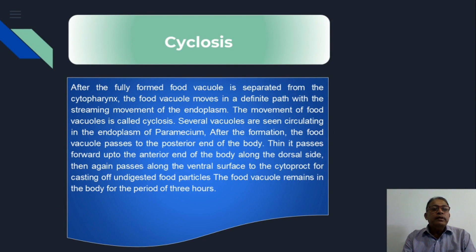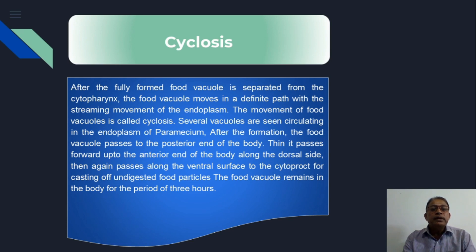The food vacuole is fully formed when it is laden with food material taken by ingestion via the oral groove of Paramecium, along with water current. The food vacuole is formed at the tip of the cytopharynx, and when it contains maximum food material, it is pinched off and separated from the cytopharynx. The food vacuole then moves in a definite path with the streaming movement of the endoplasm.